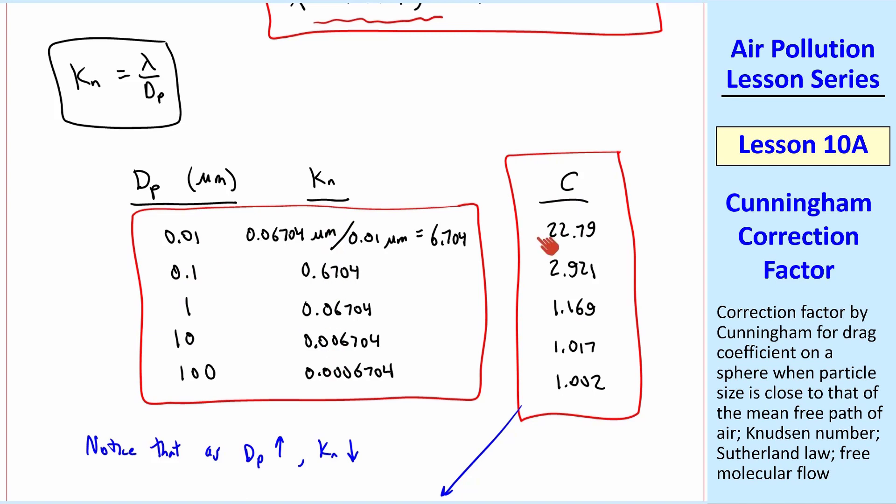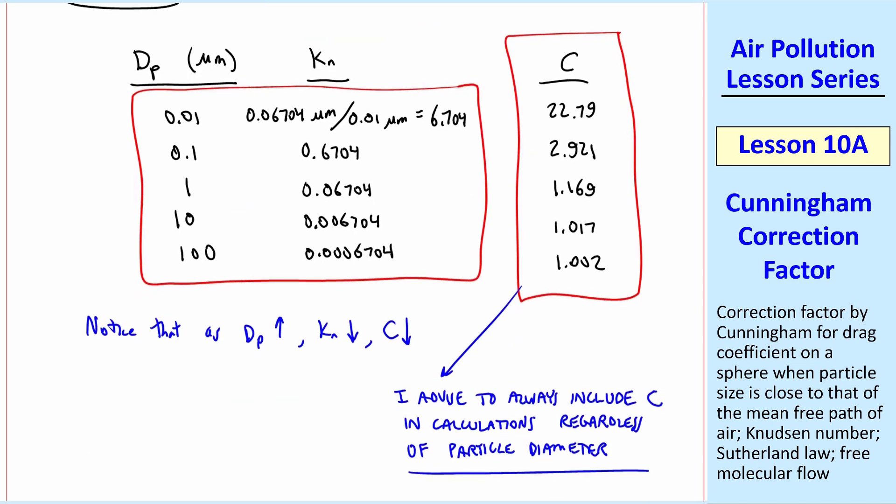As I had plotted, C goes down as particle diameter goes up. So as particle diameter increases, Knudsen number decreases, and C also decreases. But it doesn't go to 0. It levels off at 1. Even though for large particle diameters, C is not very relevant, I advise you to always include C in all your calculations of sphere drag, regardless of particle diameter, especially if you use software and you have Cd replaced by Cd over C. It doesn't hurt to do this calculation even when C does not have much effect. But it certainly matters for these small particles.